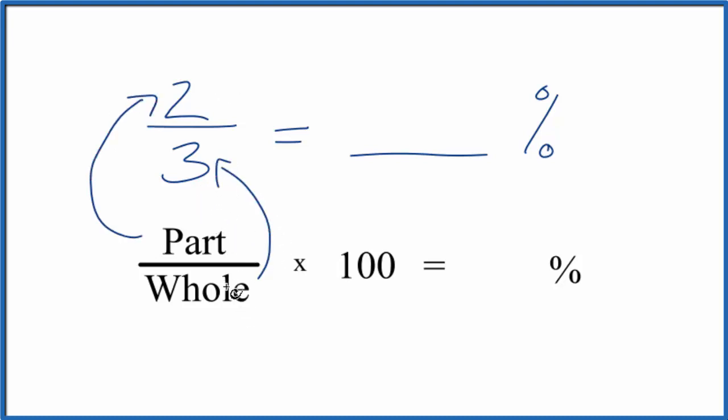So if we divide the part by the whole that'll give us a decimal. So let's divide 2 by 3.